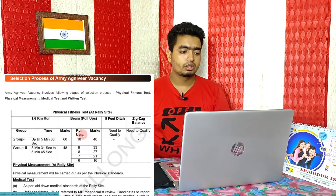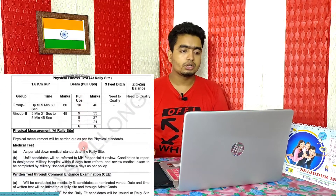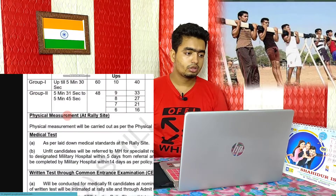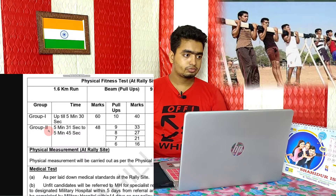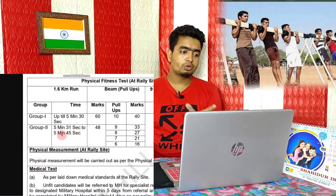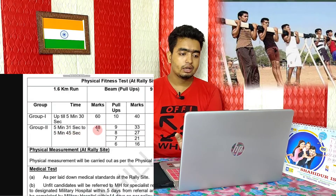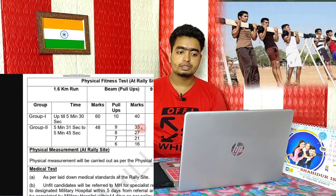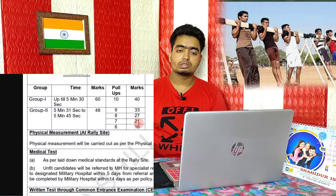For the selection process physical fitness test: Group 1 requires a 1.6 km run in 5 minutes 30 seconds for 60 marks, and pull-ups 10 times for 60 marks. Group 2 requires a run in 5 minutes 30 seconds for 60 marks, and pull-ups 9 times for 33 marks.